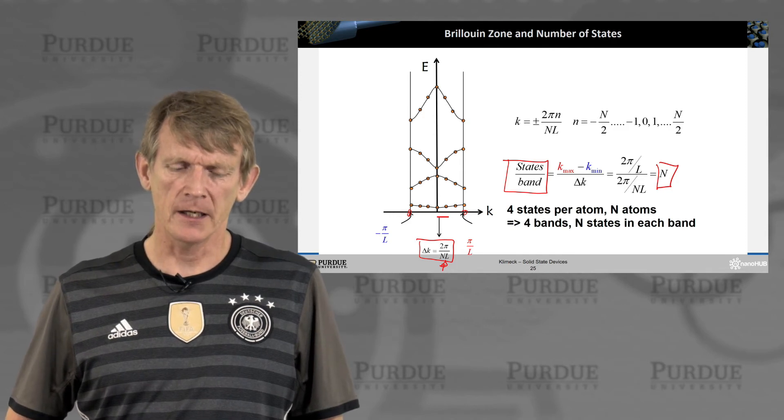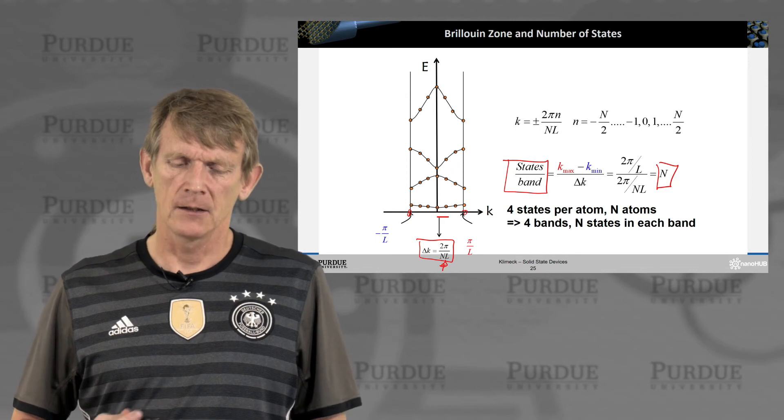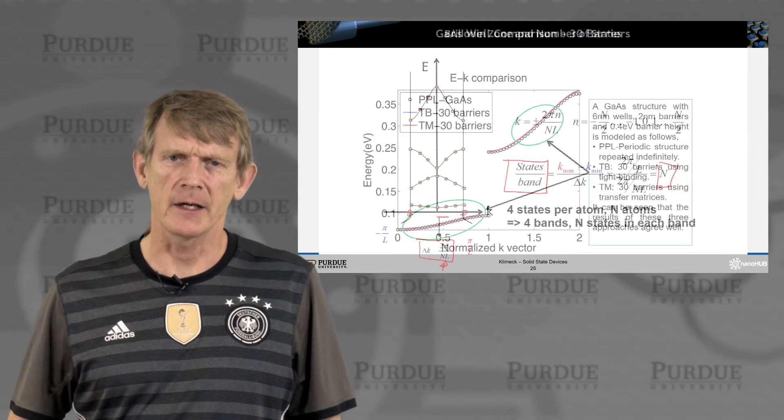So in this case here, we have four states per atom. We have N atoms. We have four bands of N states in each band.